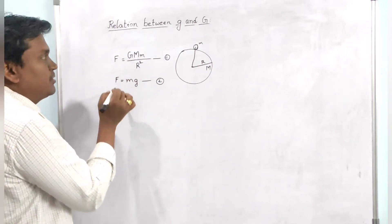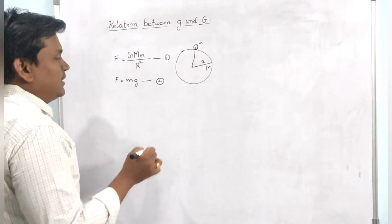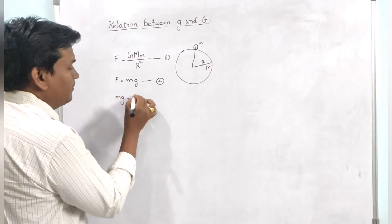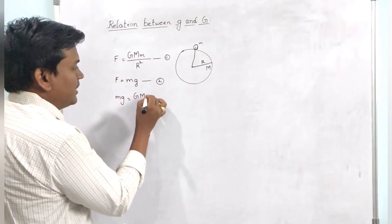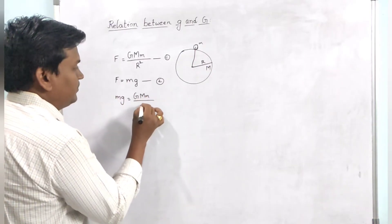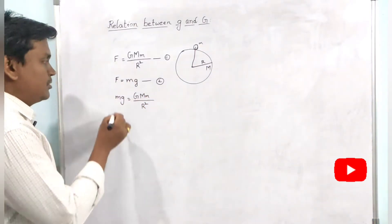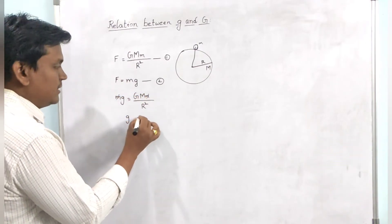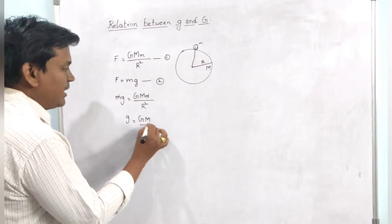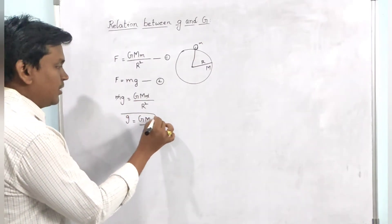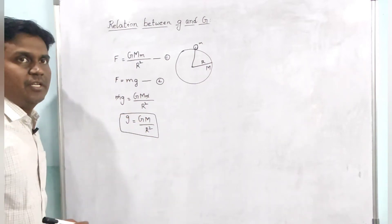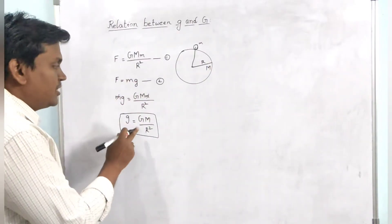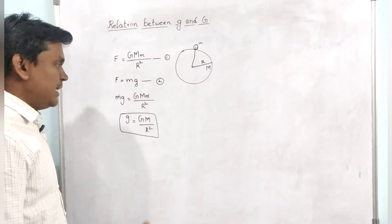Since both expressions represent force, we can equate the two equations. That gives mg equal to G capital M small m by R square. Cancelling small m from both sides, we get small g equal to capital G times capital M by R square.